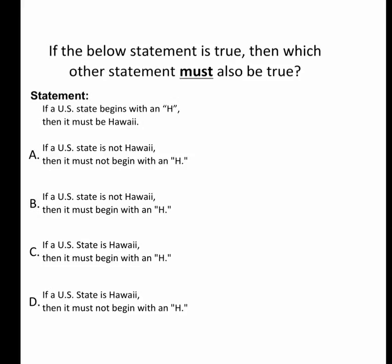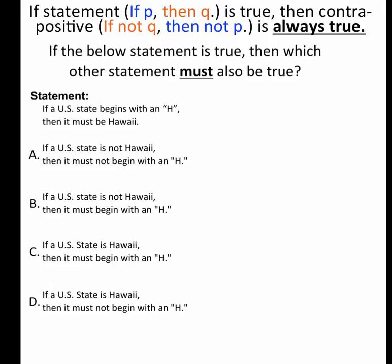What we know about conditional statements, or if-then statements, is if we take the two pieces of them and flip them and put them in different parts of the sentences, and take the opposites or put nots with them, then that's called the contrapositive. And the contrapositive is always true.